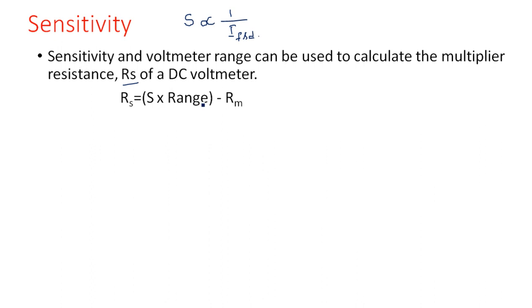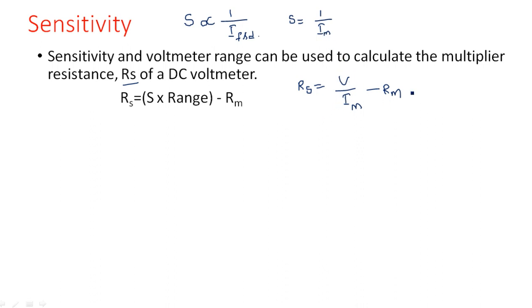How we derived this: RS = V/IM − RM, and since S = 1/IFSD = 1/IM, substituting gives RS = S × V − RM. Since V is the range, RS = S × range − RM.